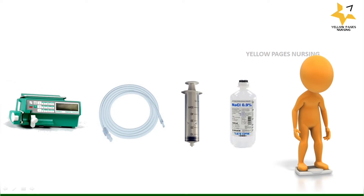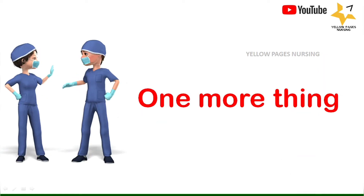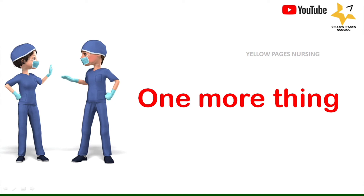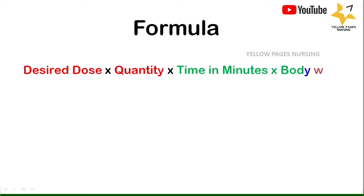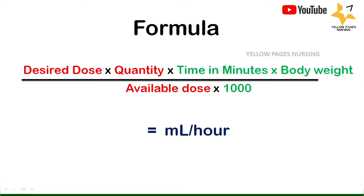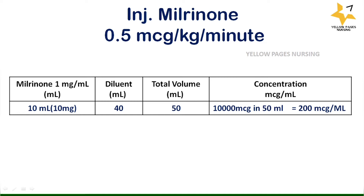If an infusion pump is required, then we use a drip set, solution for dilution, and the patient's body weight. A very important thing to keep in mind is having a very good intravenous access line before beginning the infusion. The formula is: desired dose × quantity × time in minutes × body weight ÷ available dose × 1000, which gives ml per hour. Let's solve the example with total volume 50 ml — milrinone 10 ml and diluent 40 ml — thereby concentration is 200 microgram per ml.